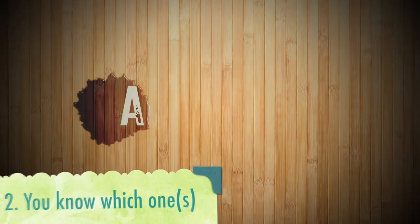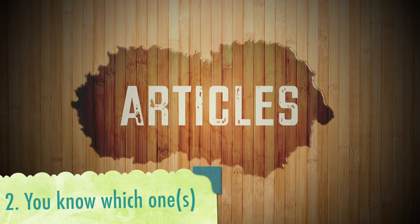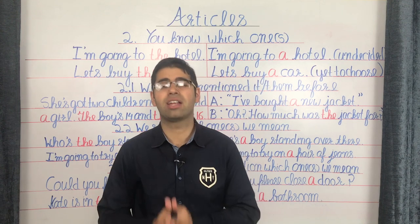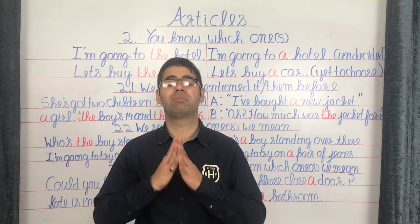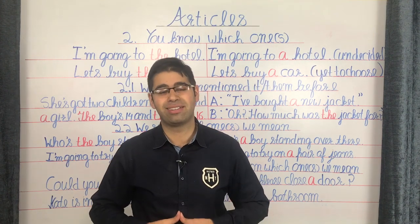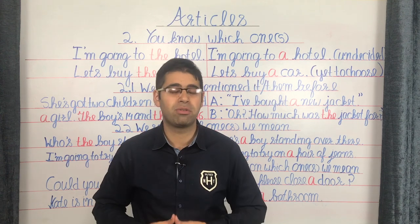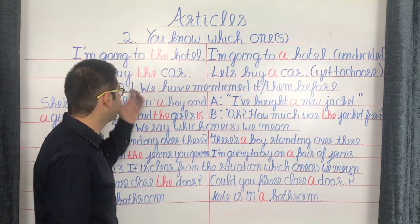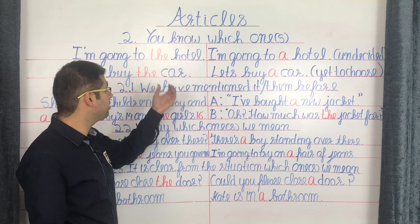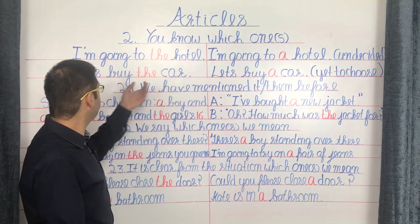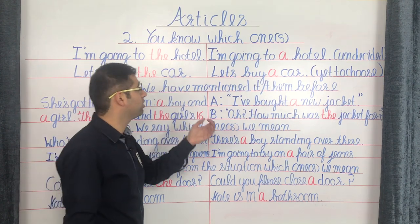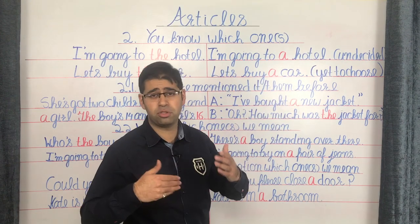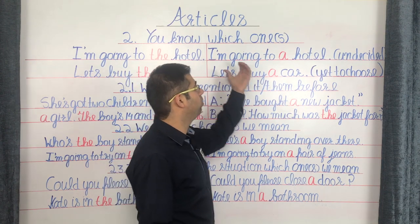Let's proceed to rule number 2: 'you know which ones.' When the speaker and the listener are both already aware of the person or thing being talked about, we use the article THE. As opposed to this, when neither the speaker nor the listener is clear about the person or object, the article of choice is A. For example: 'I'm going to the hotel' — both parties know which hotel. Versus 'I'm going to a hotel' — the speaker is undecided about the choice of hotel.